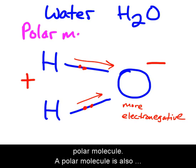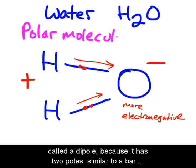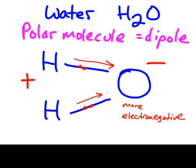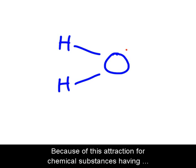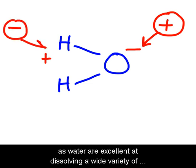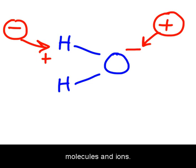A polar molecule is also called a dipole because it has two poles, similar to a bar magnet having a positive and negative end. Because of this attraction for chemical substances having either a positive or negative charge, polar molecules such as water are excellent at dissolving a wide variety of molecules and ions.